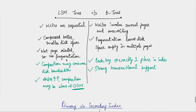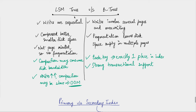However, LSM trees also have downsides. Compaction runs in the background and consumes disk bandwidth. As the database grows, compaction takes more time and consumes more and more disk bandwidth. If the machine can handle 100 writes per second, and compaction is consuming 30–40 of those, production writes can only use 50–60 writes per second. So compaction interferes with disk bandwidth, causing production writes to slow down.